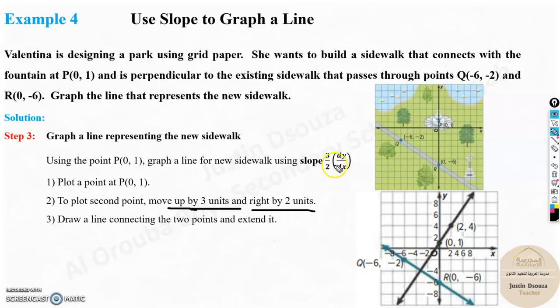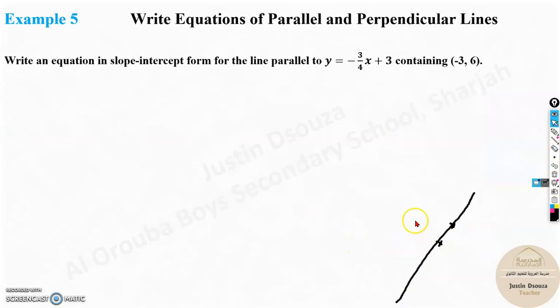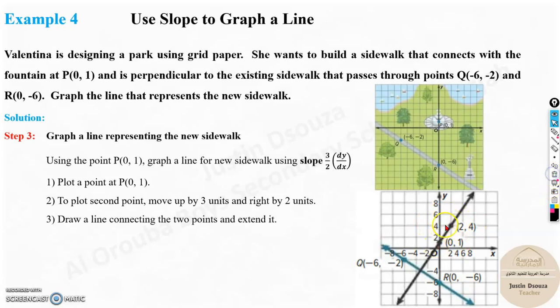So up by 3 units. Now what it means is you need to move 2 units to the right from here 0, 1 and 2. So from 0, you'll get 2 and 3 units up. So it'll be 1, 2, 3. So you will reach 4 because it's already at 1. 1 plus 3 is 4. 0 plus 2 is 2. So you will get these two points. Now all you need to do is draw a straight line connecting those two points. That is the graph for the new sidewalk.